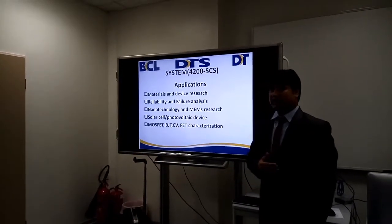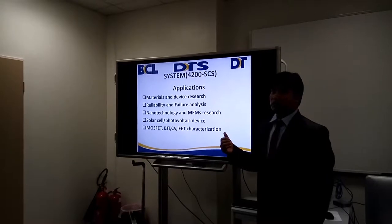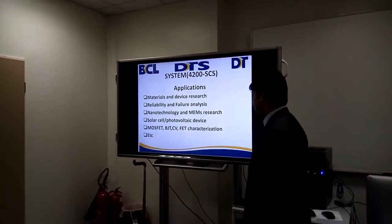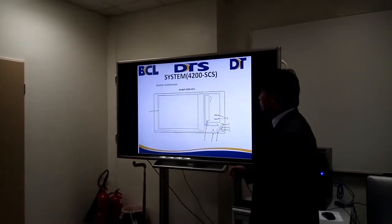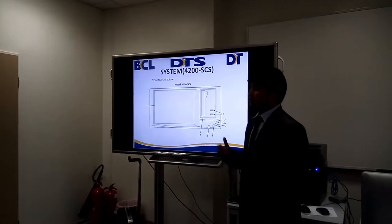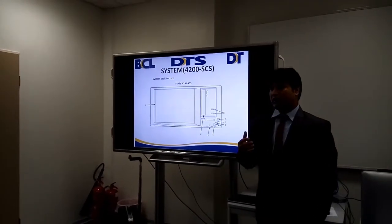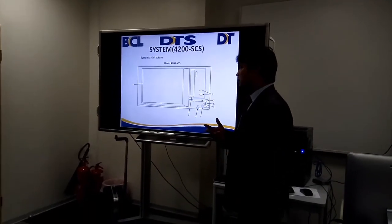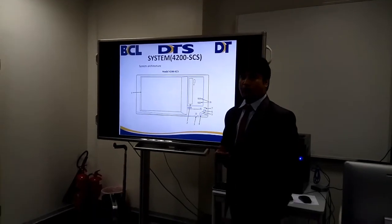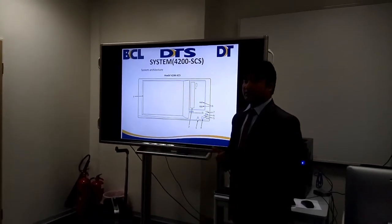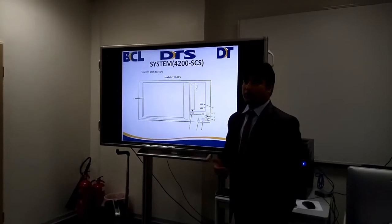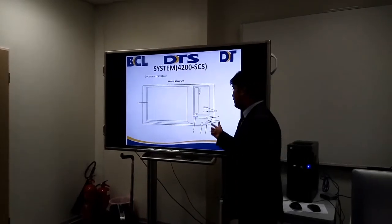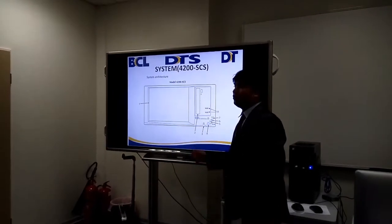Nanotechnology, MOSFET, BJT, and many more applications — it is used to characterize the material and device. About the system, if we discuss how our system looks, the system has very few pre-requirements to operate it. Basically we require two things to operate the system: one is the power requirement, and the second is a standard table to keep our equipment. The system has two parts — one is the front part, and the other is the back part.